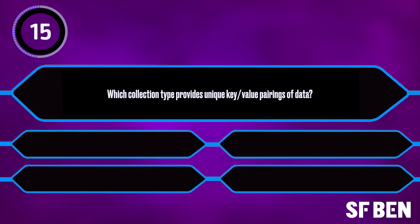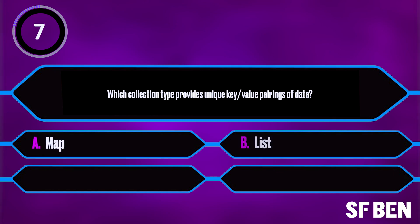Which collection type provides unique key-value pairings of data? Is the answer A: map, B: list, C: array, or D: set?